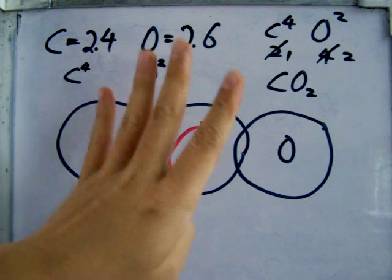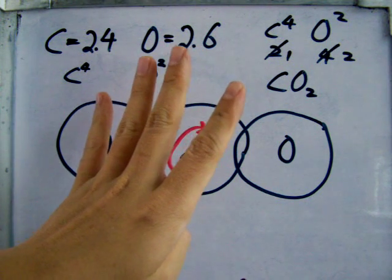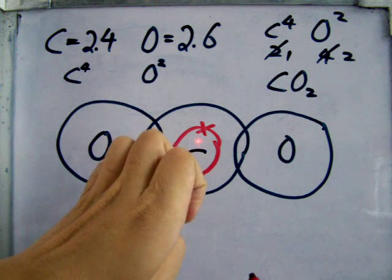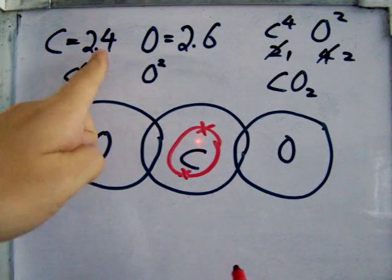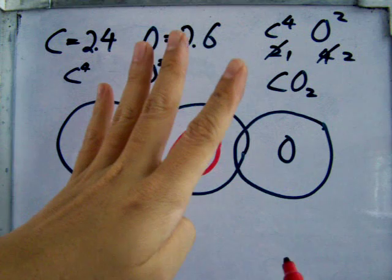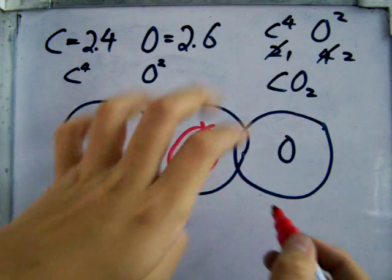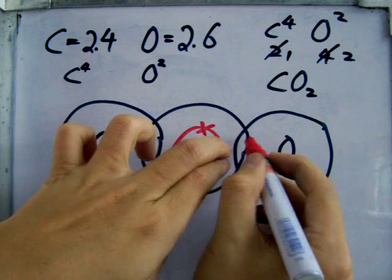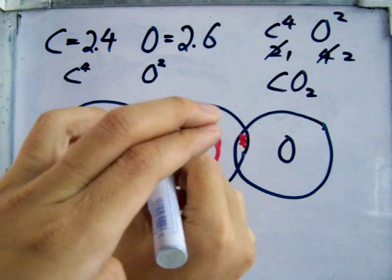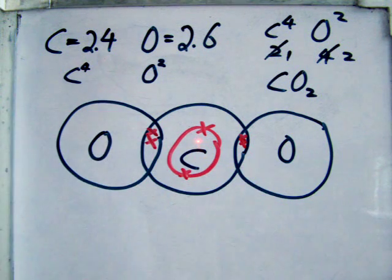So need four more. If need four more, it will contribute four. Okay. So four electrons, need four, contribute four. Okay. So no more outside here. This four, two will come inside here. Another two will be here. Finish for C.